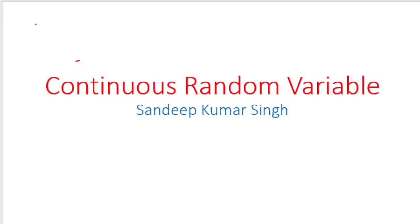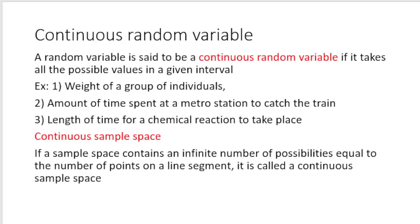Welcome everyone. In this video I will talk about continuous random variable. I already have uploaded a video in which I talked about discrete random variable. In case you feel you require more problem solving, you can request it through the comment section. So let's start. First of all, let us look at the definition — what is a continuous random variable? A random variable is said to be a continuous random variable if it takes all possible values in a given interval. Examples: weight of groups of individuals, amount of time spent at a metro station to catch the train, length of time for a chemical reaction to take place.